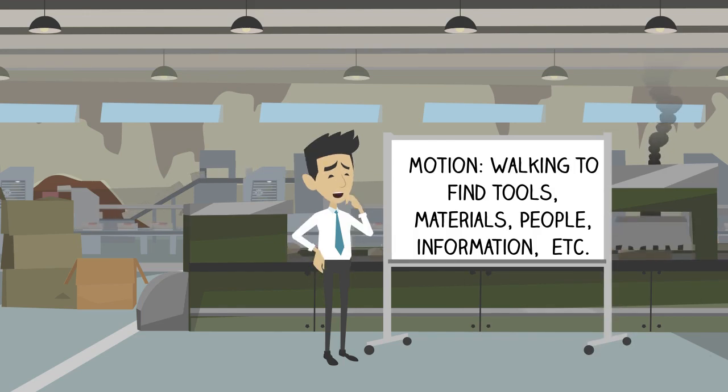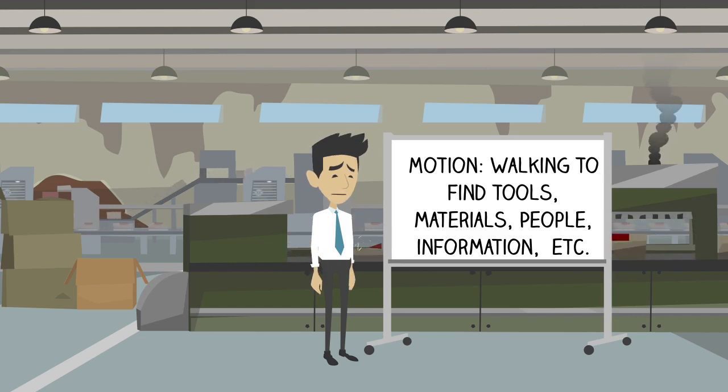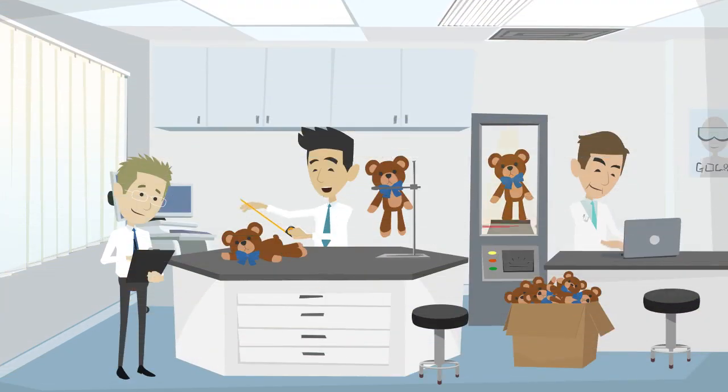Motion waste includes primarily walking but also unsafe motion such as bending, reaching, etc. A certain amount of motion is necessary to do the job. We must move to obtain tools, materials, and other items that we need to add value. In lean thinking, we work to minimize motion to as little as possible. We do this by placing all needed items at the point of use and eliminating any wasted time and motion spent searching for items.